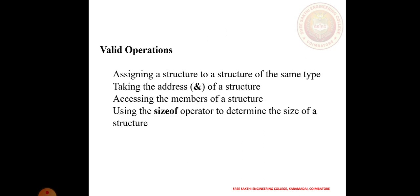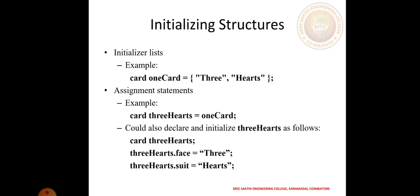Valid operations on structures include: assigning a structure to another structure of the same type, taking the address using ampersand, accessing members of the structure, using the sizeof operator to determine the size of the structure, and initializing the structure. For example: struct card oneCard = { "3", "Hearts" }; You can also initialize individually as: threeHeart.face = "3" and threeHeart.suit = "Hearts".